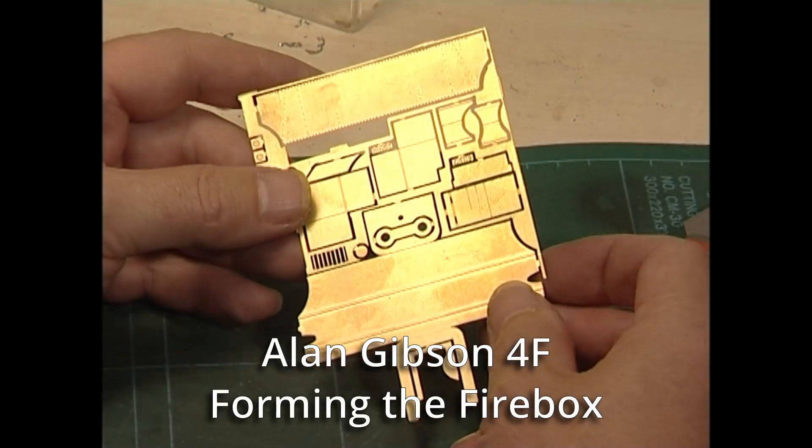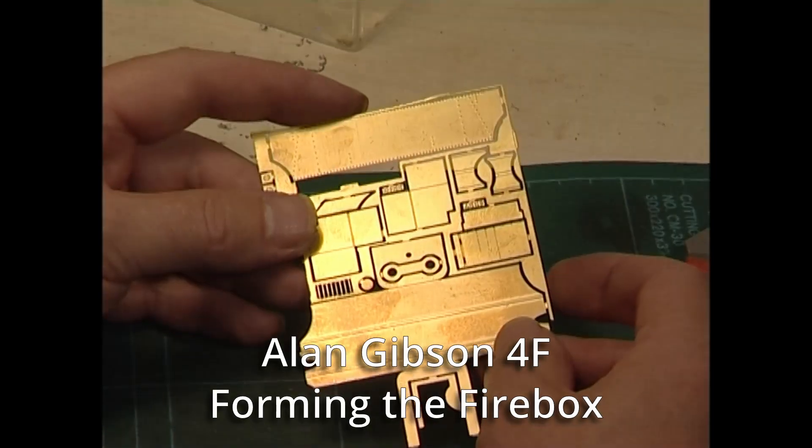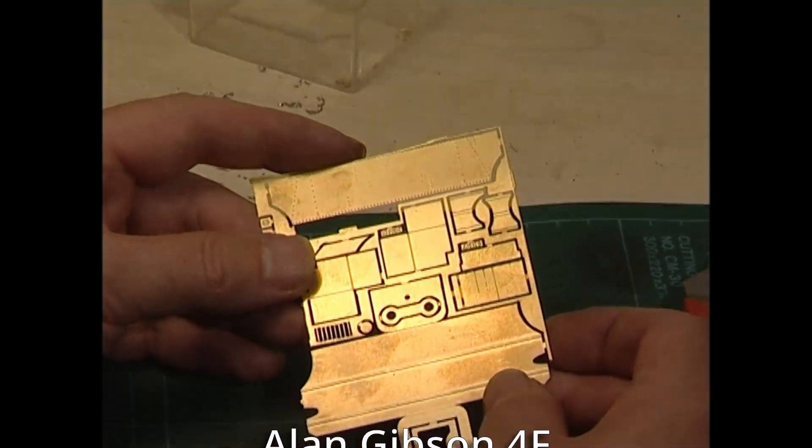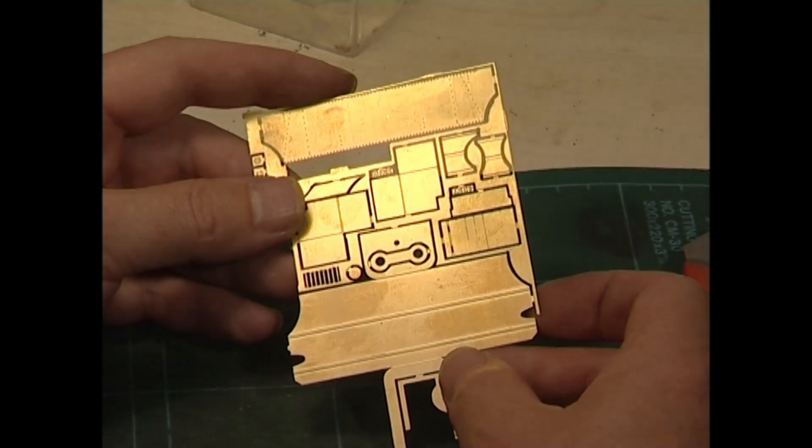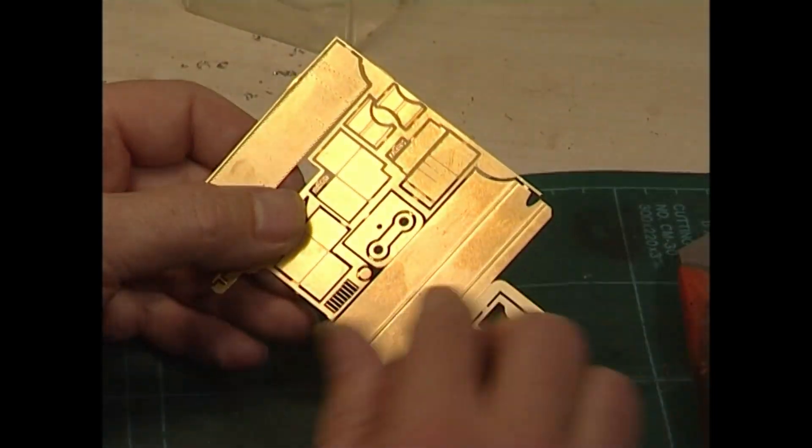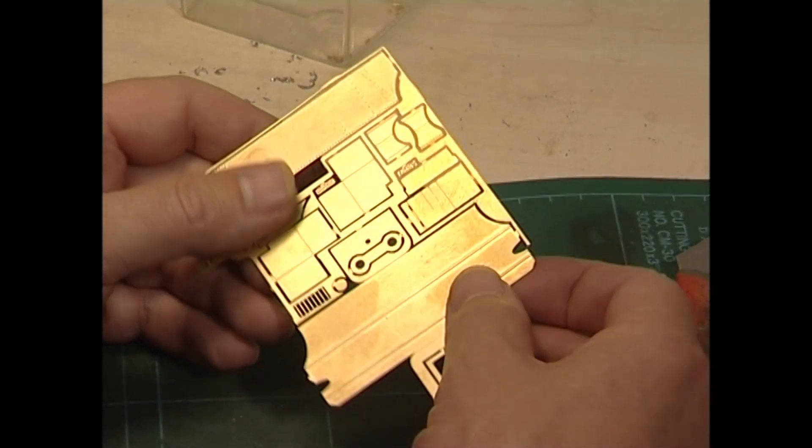This is almost all etched brass. The boiler firebox assembly on the 61XX and the A2 were made of white metal. This one is made of brass and it has to be formed.